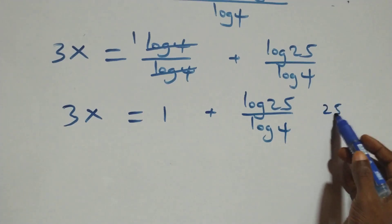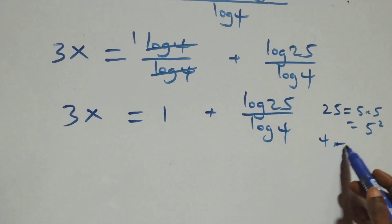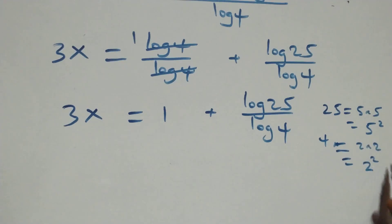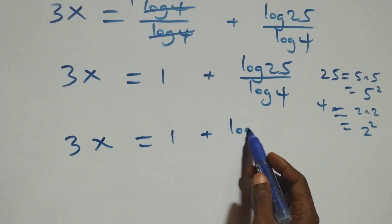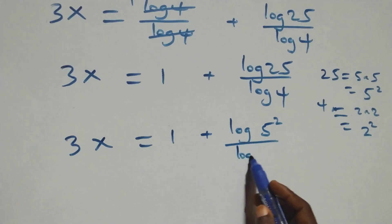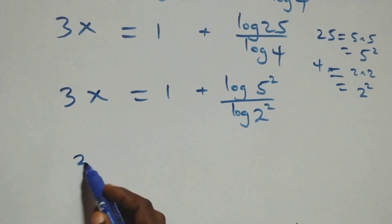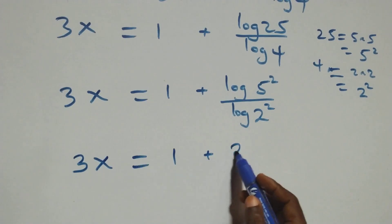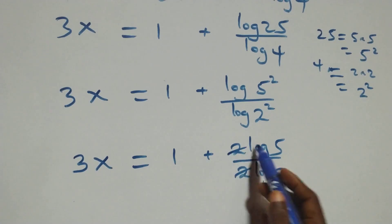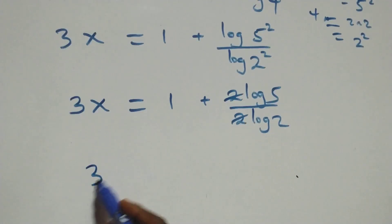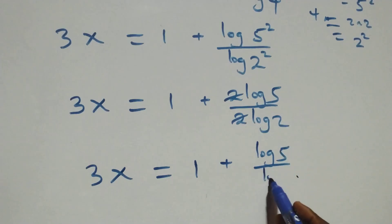Which implies 3x equals to 1 plus log 25 over log 4. Now, 25 can be written as 5 times 5, which is 5 squared. And also 4 can be written as 2 times 2, which is 2 squared. So we have 3x equals to 1 plus log(5 squared) over log(2 squared). Applying the power rule of log, 2 comes down in both numerator and denominator, giving 3x equals to 1 plus 2·log 5 over 2·log 2. The 2s cancel each other, and this becomes 3x equals to 1 plus log 5 over log 2.